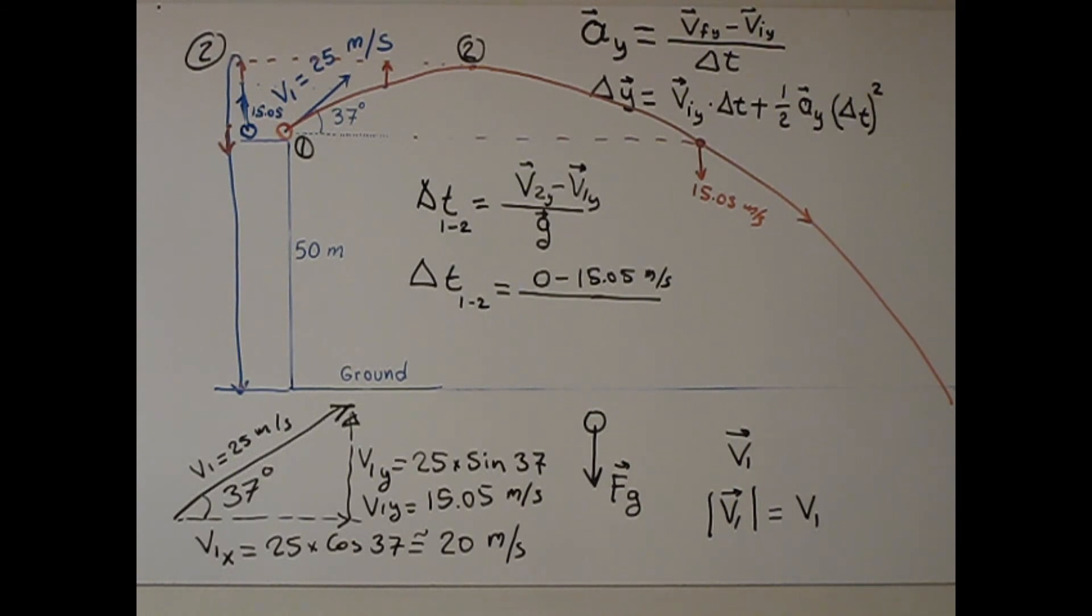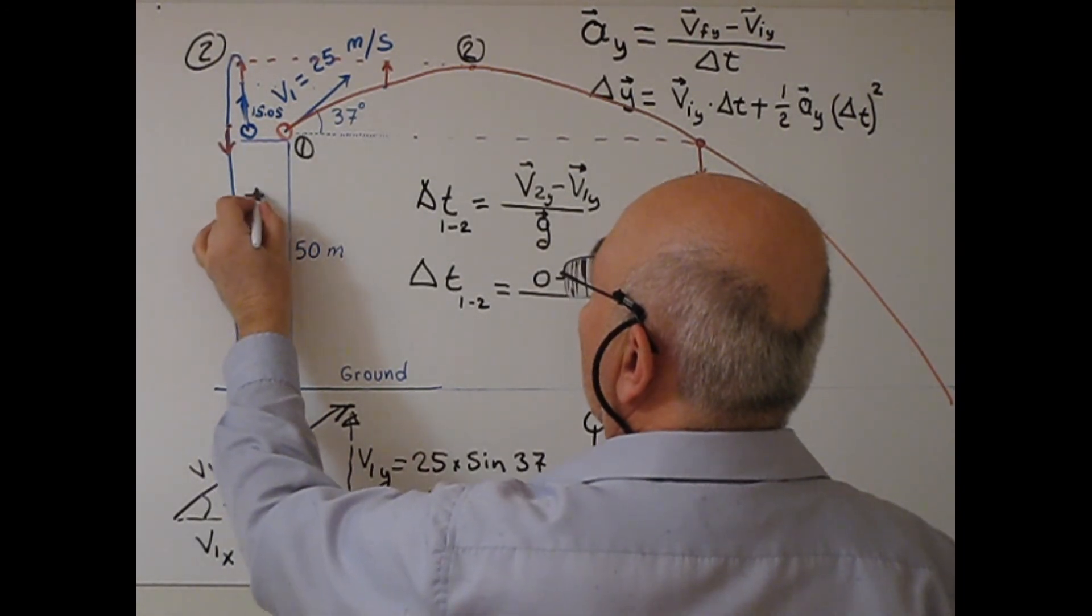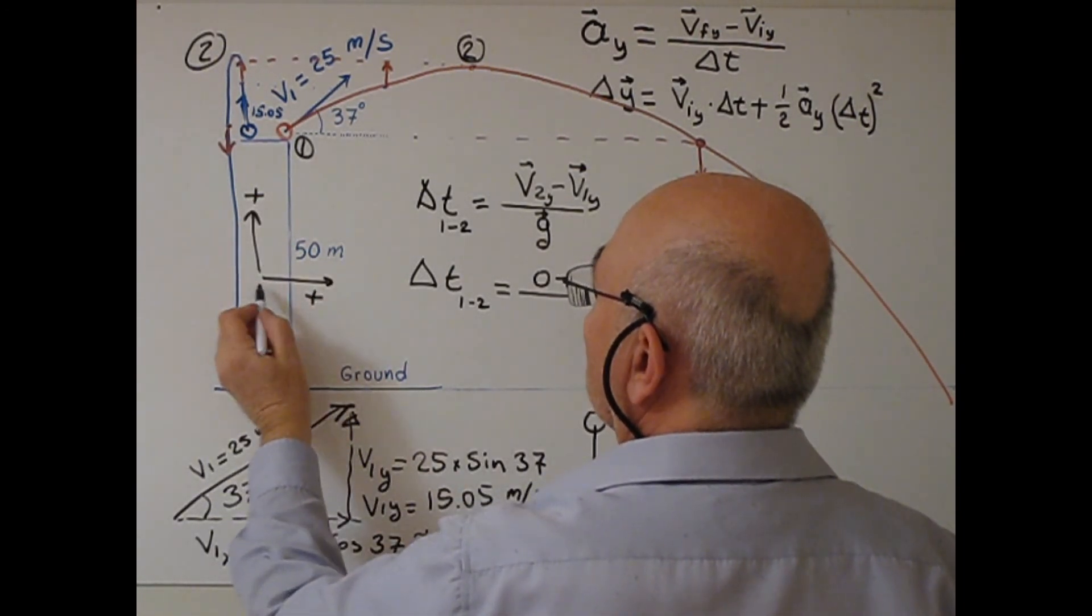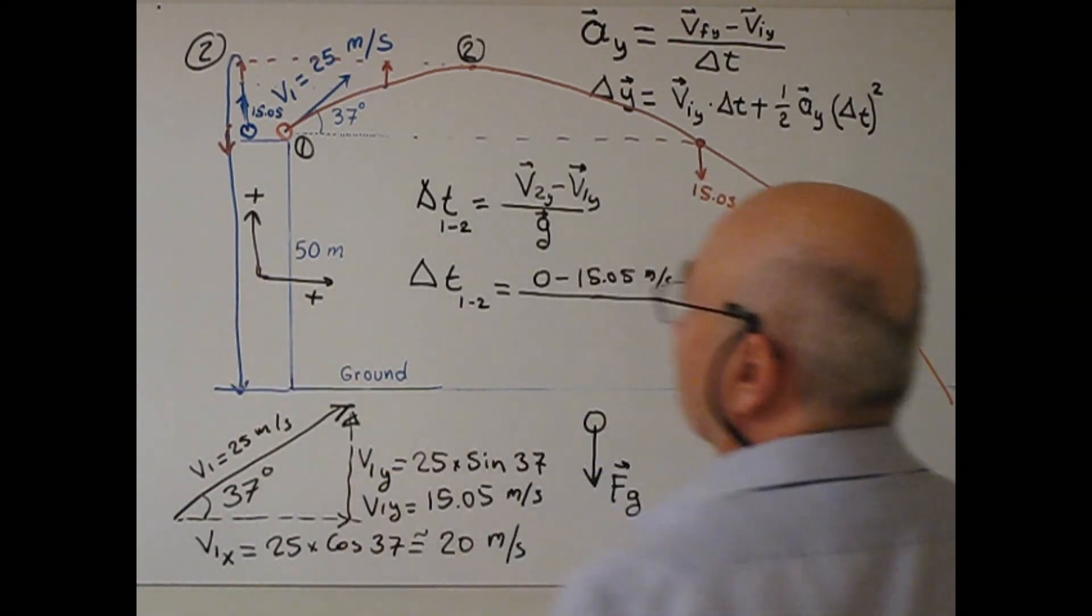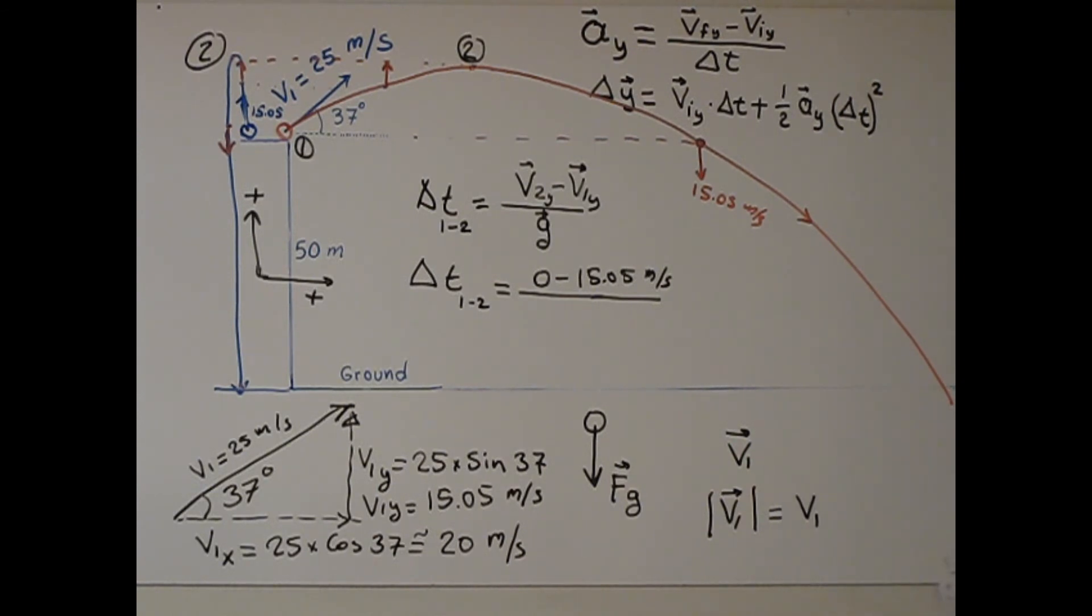Okay, V1Y is 15.05 meter per second. Okay, for this problem, we need to decide which direction positive, which direction negative. Okay, let's say up is positive, up is positive, right is positive. So, down will be negative, left will be negative. We can do the other way around. Okay, so in this case, V2, V1Y will be positive, because up, G will be negative. So, negative 9.8 meter per second square. From here, we can calculate 1.54 second.